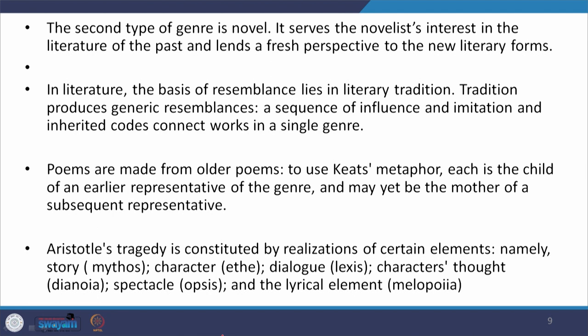In literature, the basis of resemblance lies in literary tradition. Tradition produces generic resemblance — a sequence of influence and imitation and inherited conventions that connect works belonging to a single genre. Poems are made from older poems. To use Keats's metaphor, each is the child of an earlier representative of the genre and may yet be the mother of a subsequent representative.